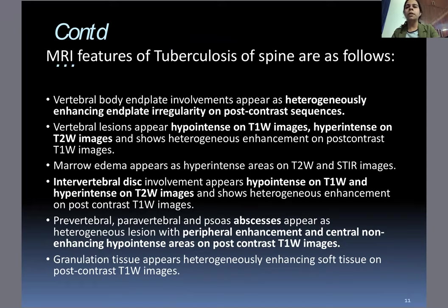MRI features: Vertebral body end plate involvement appears as heterogeneously enhancing end plate irregularity on post-contrast sequences — hypointense on T1-weighted and hyperintense on T2-weighted images. Marrow edema also appears hypointense on T1 and hyperintense on T2-weighted and STIR images. Intervertebral disc involvement appears hypointense on T1 and hyperintense on T2-weighted images, with heterogeneous enhancement on post-contrast T1-weighted images. Pre-vertebral, paravertebral, and psoas abscesses appear as heterogeneous lesions with peripheral enhancement and central non-enhancing hypointense areas.